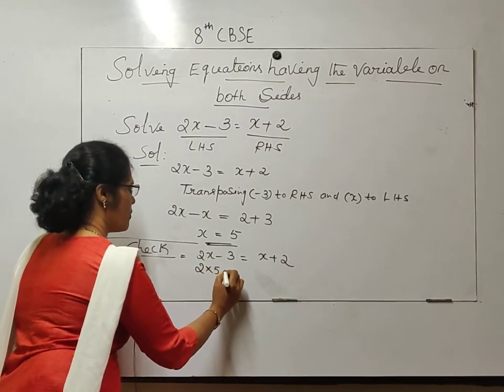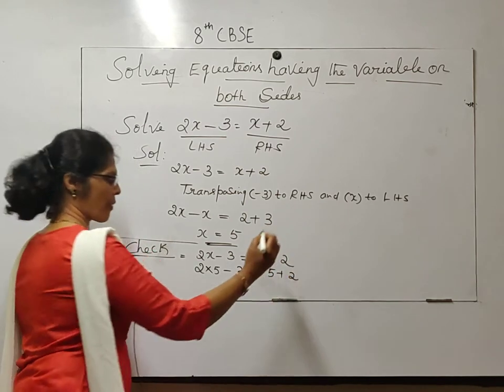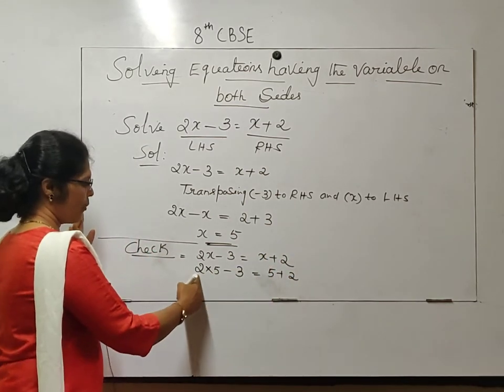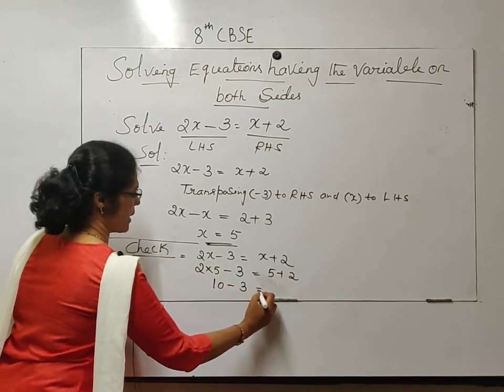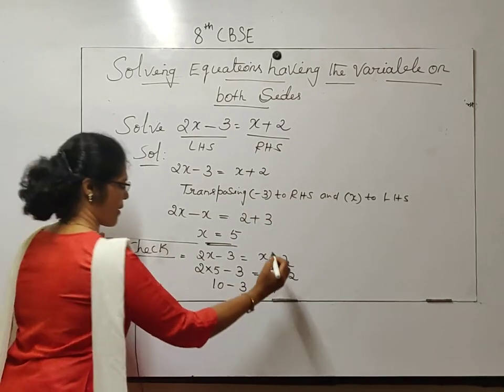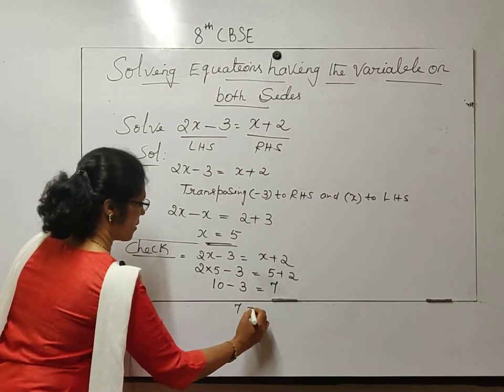Substituting x equals 5: 2 into 5 minus 3 equals 5 plus 2. 5 times 2 is 10. 10 minus 3 is 7, and 5 plus 2 is 7.